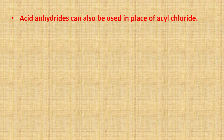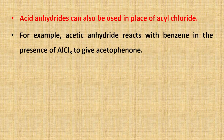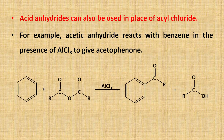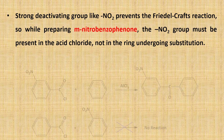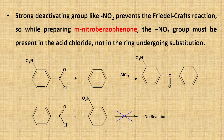In Friedel-Crafts acylation, acid anhydride can also be used in place of acyl chloride. For example, acetic anhydride reacts with benzene in the presence of aluminium trichloride to give acetophenone. Strong deactivating groups like nitro prevent the Friedel-Crafts reaction. So when preparing meta-nitrobenzophenone, the nitro group must be present in the acid chloride, not in the ring undergoing substitution. If the nitro group is placed on the benzene ring, there will be no reaction, as it is a strongly deactivating electron-withdrawing group. Therefore, the nitro group must be placed on the acyl chloride.